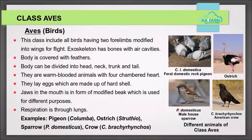Class Aves: this class includes all birds, having two forelimbs modified into wings for flight. The skeleton has bones with air cavities. Their body is covered with feathers. The body can be divided into head, neck, trunk, and tail. They are warm-blooded animals with a four-chambered heart. They lay eggs made up of a hard shell. Jaws in the mouth are in the form of a modified beak, used for different purposes. Respiration is through lungs. Examples: Pigeon (Columba), Ostrich (Struthio), Sparrow (Passer domesticus), and Crow (Corvus brachyrhynchos).